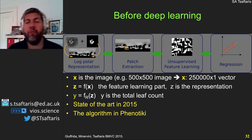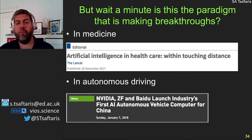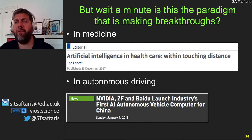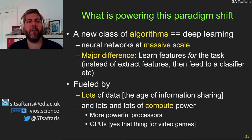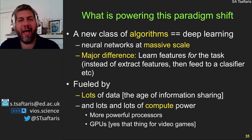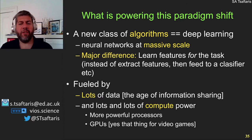Now deep learning is changing phenotyping — and not only phenotyping, but also medicine, autonomous driving, autonomous drones, and smart home devices like Alexa that recognize our voice. What is powering this new paradigm is a new class of algorithms called deep learning, which are neural networks at massive scale. The major difference is that we learn features for the task, taking advantage of supervision. Instead of extracting features by hand or by unsupervised processes and feeding them to a classifier, we now learn it all together. It's fueled by two things: data and lots of compute power.